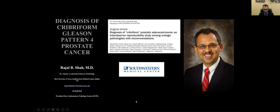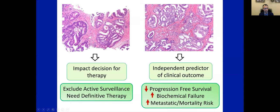Cribriform morphology has received a lot of attention in recent years. There is robust evidence suggesting that the presence of cribriform morphology would exclude patients from an active surveillance treatment option — patients would need more definitive therapy. It is also an independent predictor of various clinical outcomes, such as decreased progression-free survival, increased biochemical failure, and increased metastatic and mortality risk for prostate cancer.